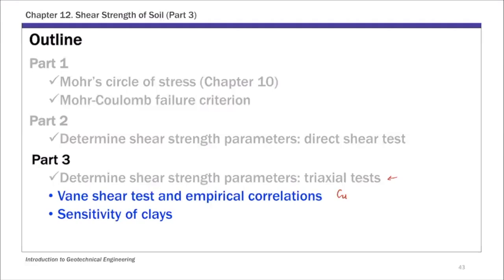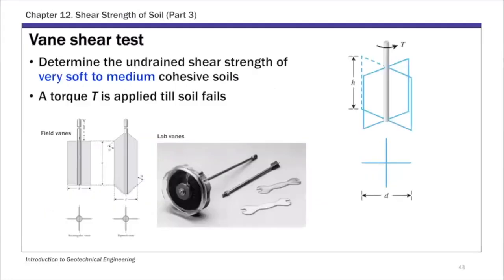So undrained shear strength of clay is an important strength parameter. So Vane shear test is used to determine Cu, and also we'll talk about empirical correlations. So first, what is a Vane shear test? If you look at the bottom two figures, the left one is a field Vane shear test device, and the one on the right is a lab Vane shear test device. So basically this is a test used to determine the undrained shear strength. Remember that's C sub U of very soft to medium cohesive soils. So basically clays.